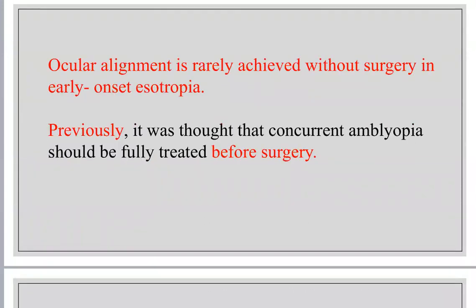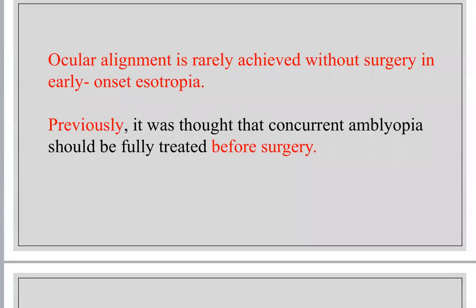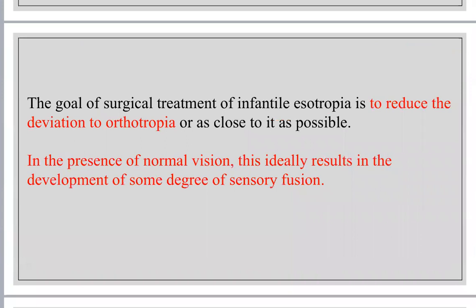Ocular alignment is rarely achieved without surgery in early onset esotropia. Previously, it was thought that amblyopia should be fully treated before surgery, but currently we can do the surgery first and treat amblyopia afterwards. The goal of treatment is to reduce the deviation to orthotropia, which will bring some degree of binocular fusion or sensory fusion.